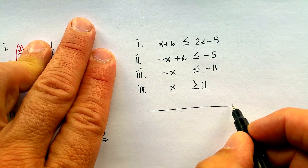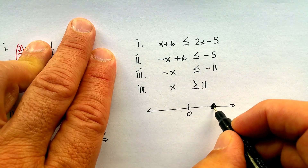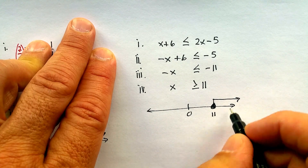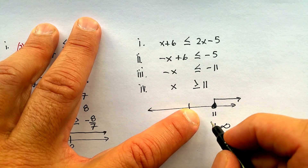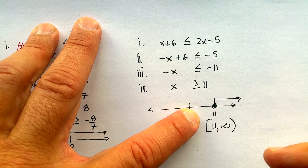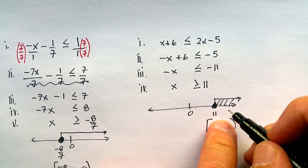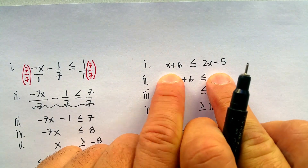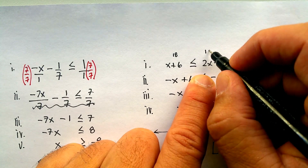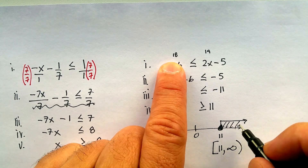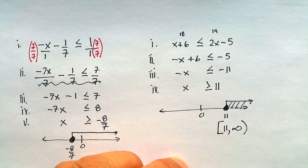That's the regular notation: x is greater than or equal to 11. For the graph, mark 11 on the number line, fill it in since there's an equal sign, and follow the direction of the arrow. Interval notation: 11 to positive infinity with a bracket on the left and parenthesis on the right — so bracket 11, comma, positive infinity, parenthesis. To check: choose a number in the shaded area, like 12. Plugging in: 12 plus 6 is 18, and 2 times 12 minus 5 is 19. Is 18 less than or equal to 19? Yes — the shaded area is correct.